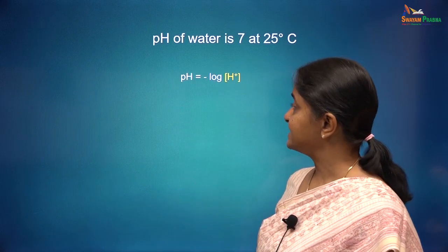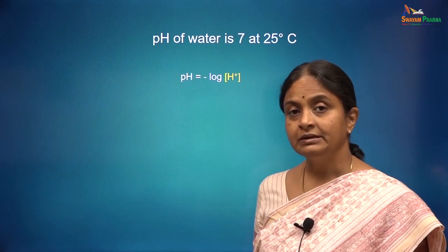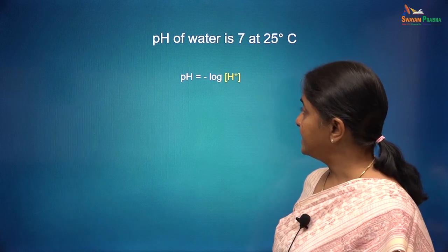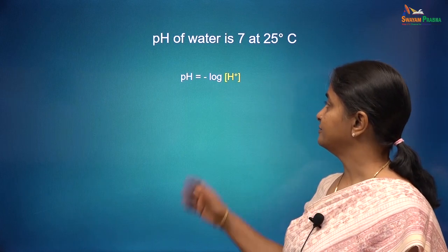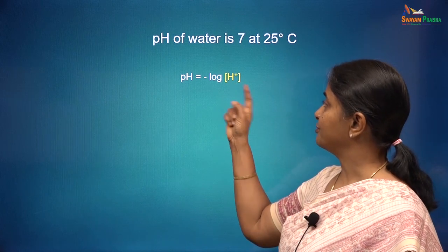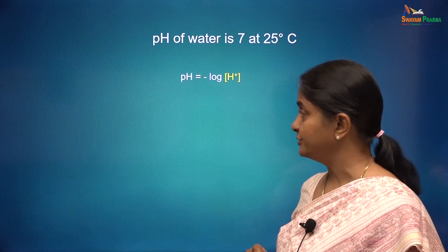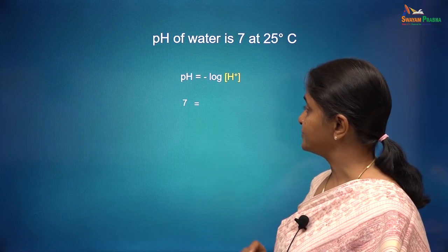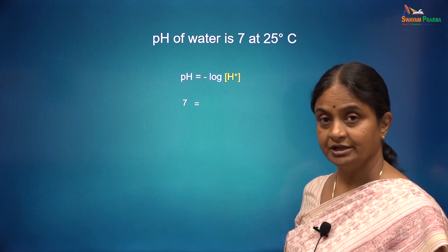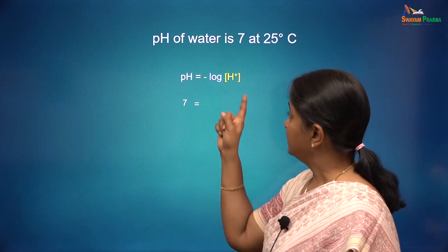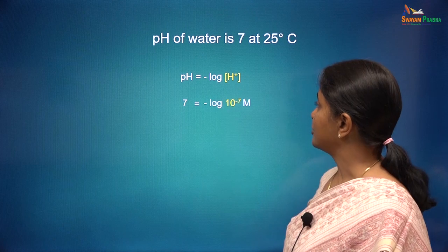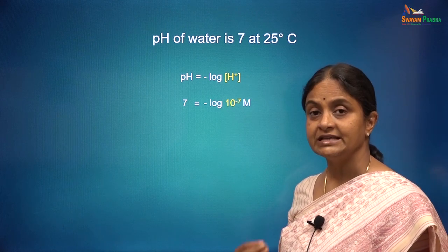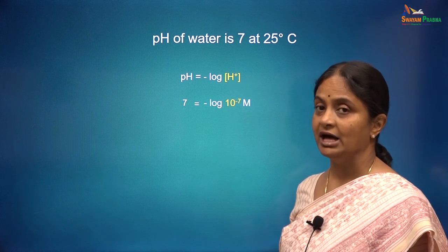Water has a pH of 7, pH being the negative logarithm of the proton concentration in a solution. To get a pH of 7 for water, the free hydrogen ion concentration has to be 10 to the minus 7 molar.